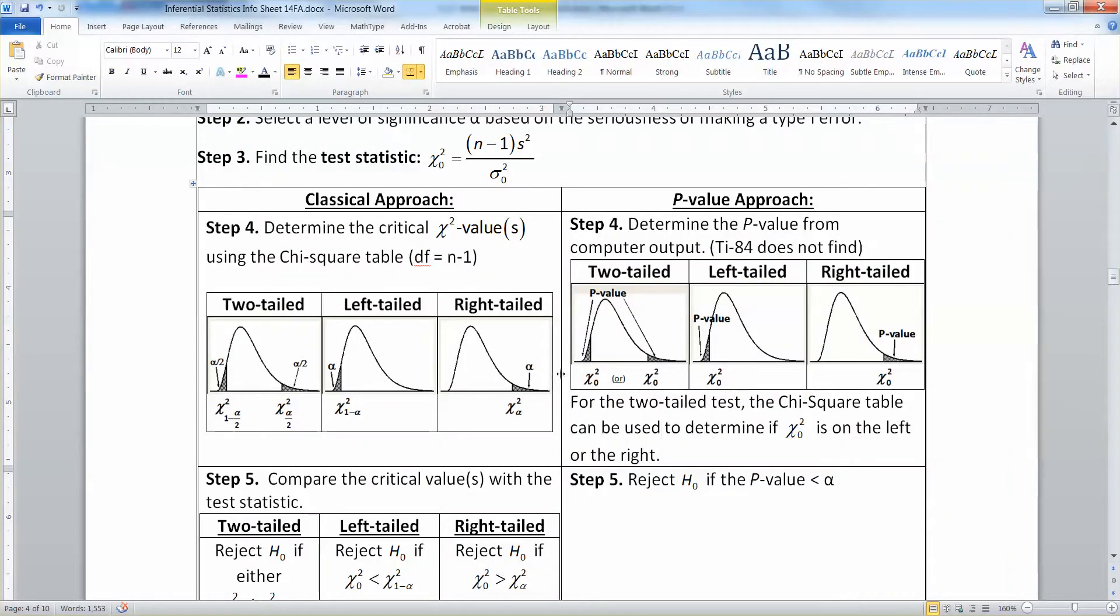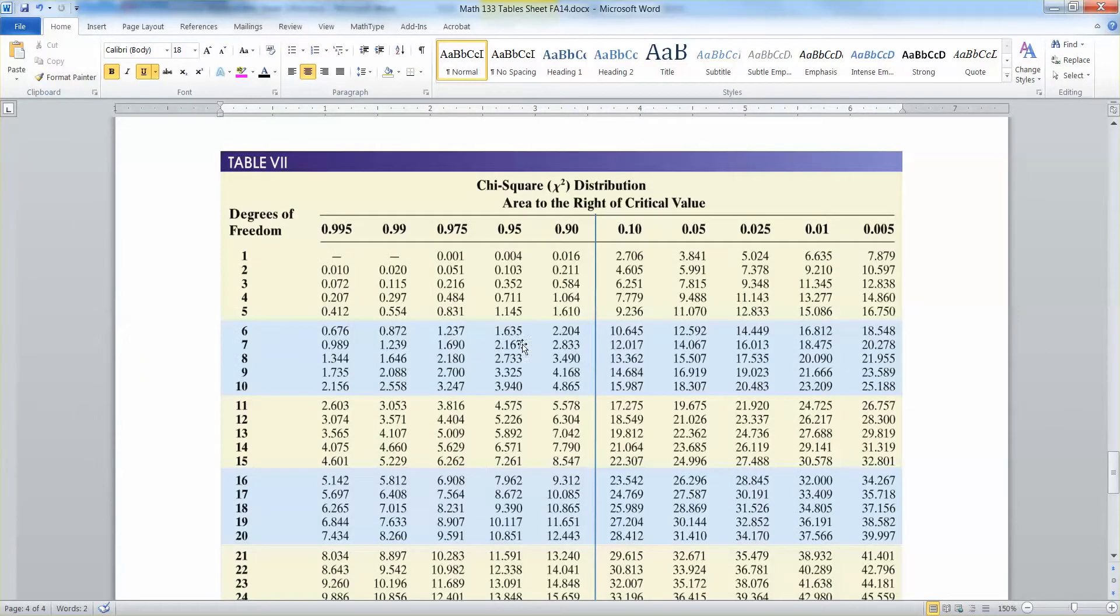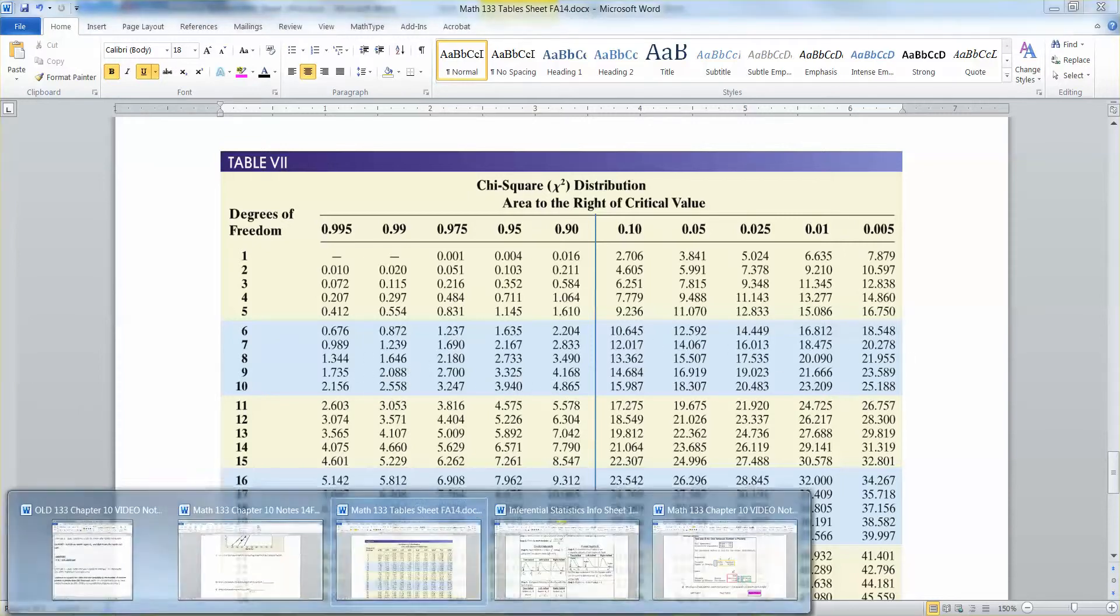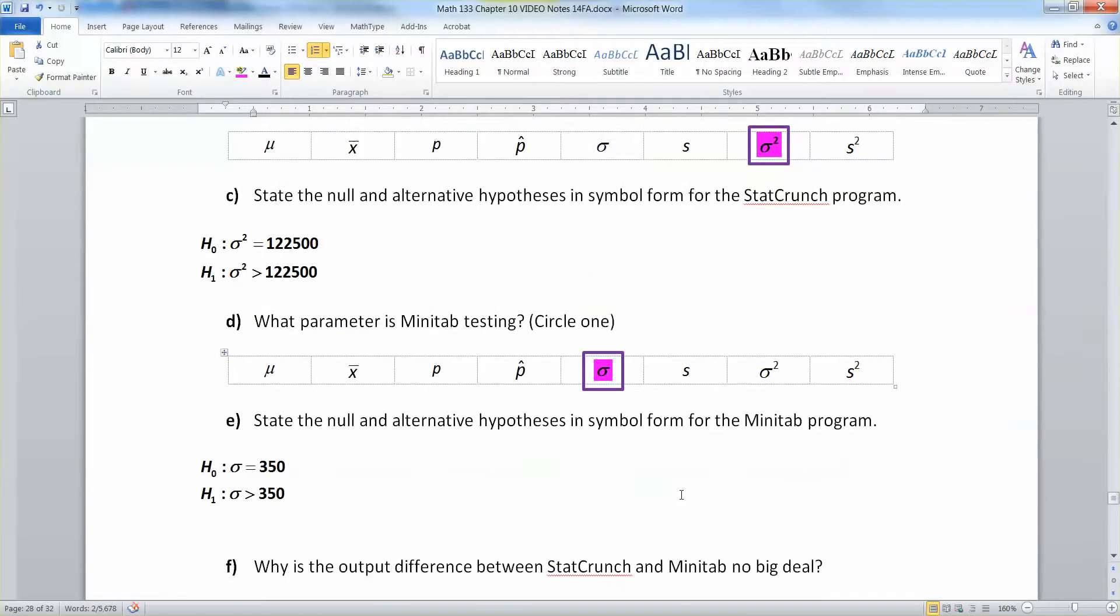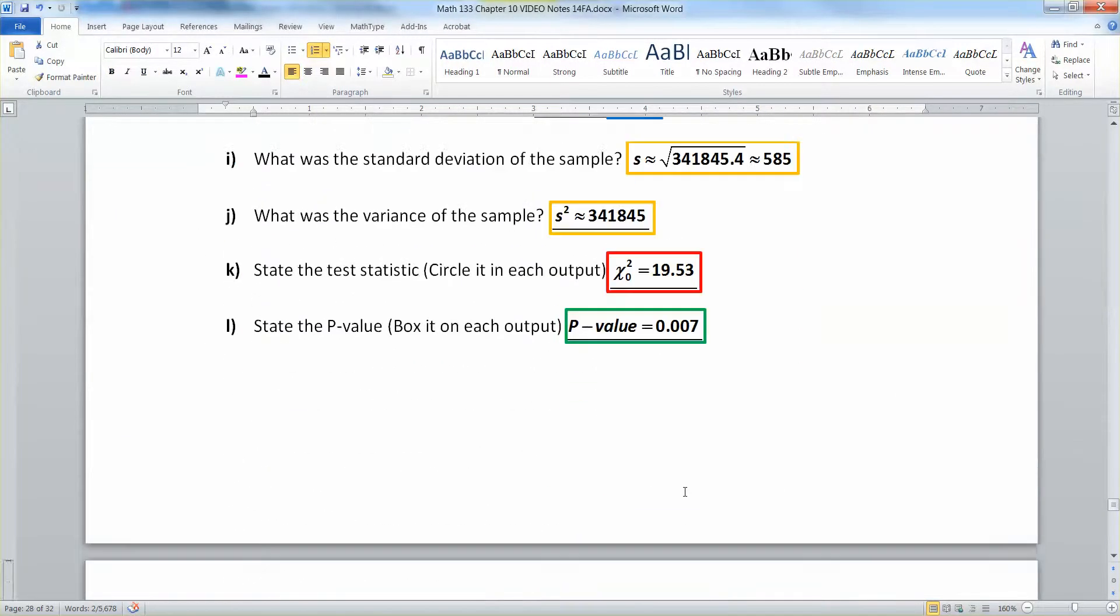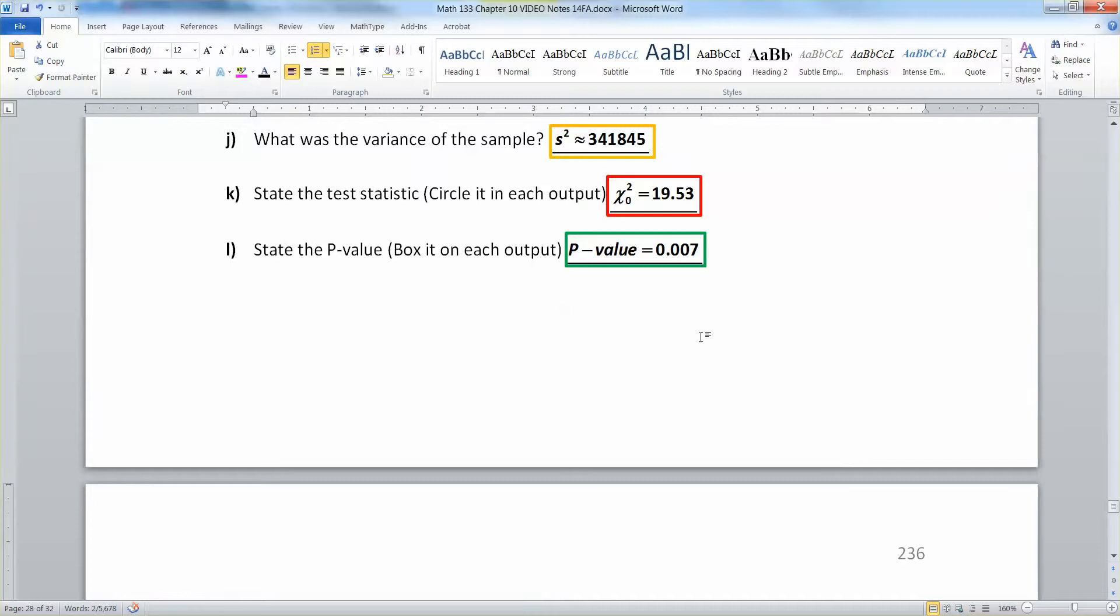That's how to tell whether or not your statistic that they give you, chi-zero-squared, is on the left or the right if you're doing a two-tailed test. Of course, a right-tailed test, it's easy, you know it's on the right. Or a left-tailed test, it's easy, you know it's on the left. But if it's a two-tailed test, that number they give you, 19.53 in our example, could have been on the left or the right. And that's how you tell. You look at your degrees of freedom in the row, in the table, and figure out if your number for your test statistic is over here on the left-hand side or over here on the right-hand side. This particular one was over on the right-hand side. Of course, we knew that anyway because this one was a right-tailed test. But if it had been a two-tailed test, that's how you would have figured it out.